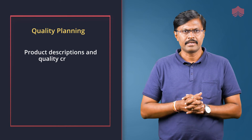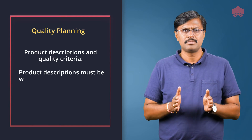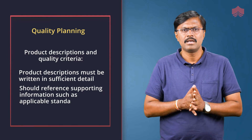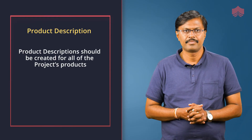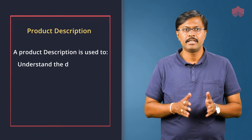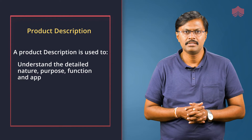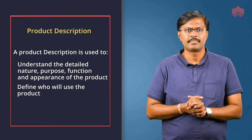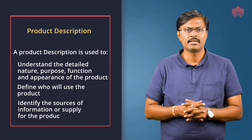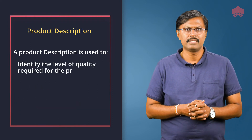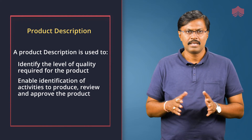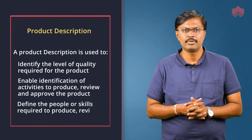Product descriptions and quality criteria: product description must be written in sufficient detail. It should reference supporting information such as applicable standards and specialist design documents. Product descriptions should be created for all the project's products. A product description is used to understand the defined nature, purpose, function, and appearance of the product. A product description defines who will use the product, identifies the sources of information or supply of the product, identifies the level of quality required for the product, enables identification of activities to produce, review and approve the product, and defines the people or skills required to produce, review, and approve the product.